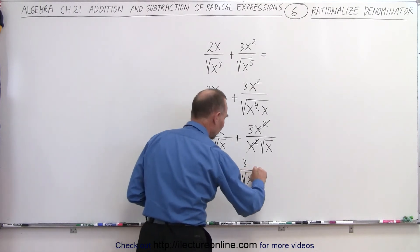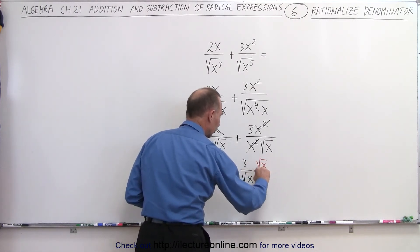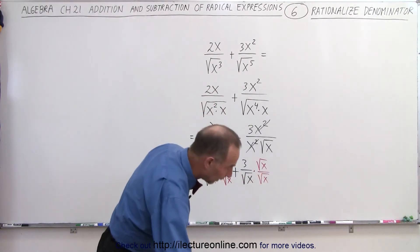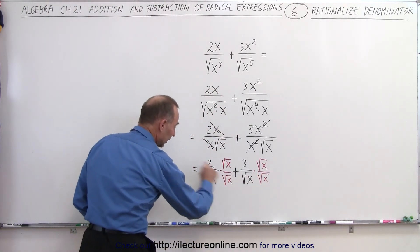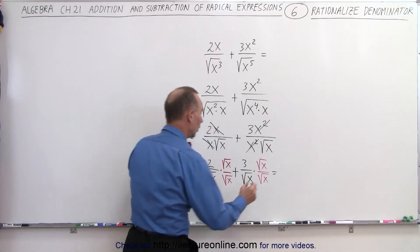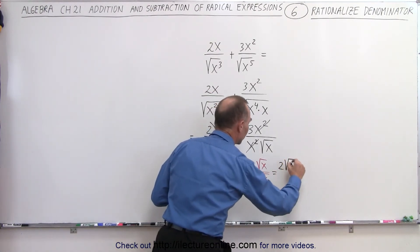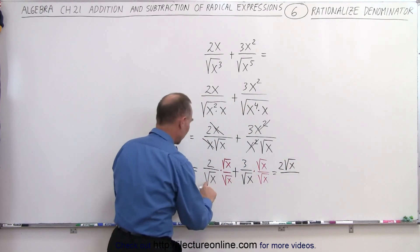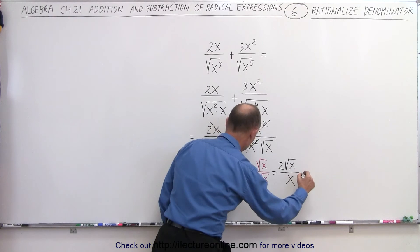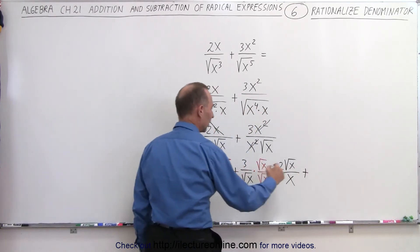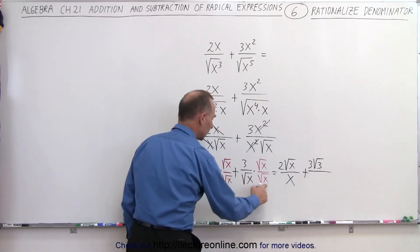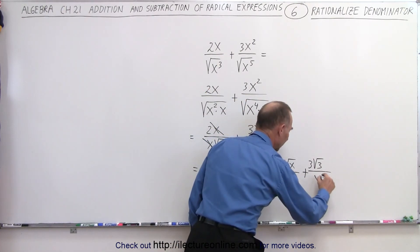I'm going to do the same over here: the square root of x divided by the square root of x. Why do we do that? In that way, we can get rid of the square root in the denominator. So this becomes 2 times the square root of x divided by the square root of x times the square root of x, which is simply x. And then plus 3 times the square root of x divided by — when you multiply this out — you simply get x.